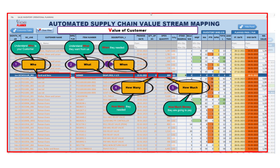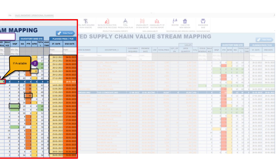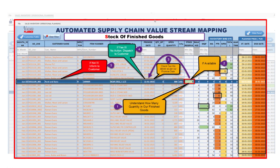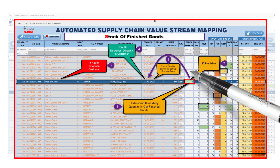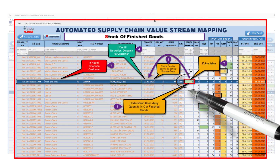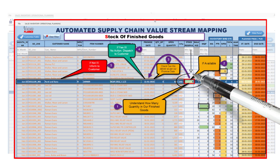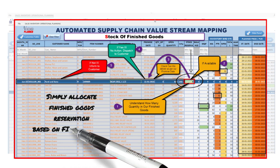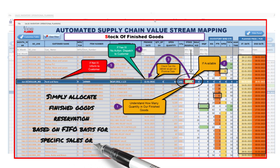Step two: Stock of finished goods. Next, our application assists you in managing your finished goods inventory. This balance is crucial for meeting demand without overstocking, which ties up capital and storage space.